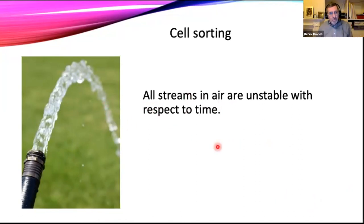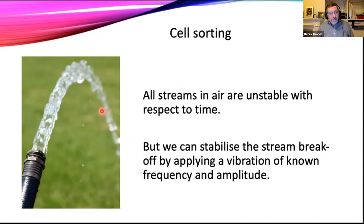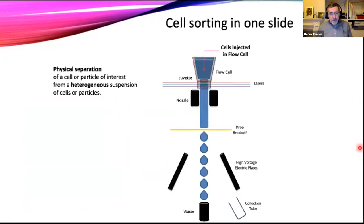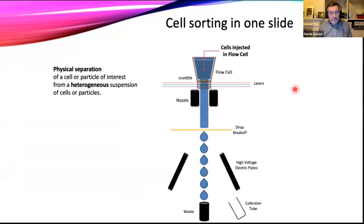Our streams are unstable — they're going to break up into droplets. If you vibrate a hose, the break-off stabilizes. We can stabilize that break-off by applying a known vibration — the number of times we move the hose per second and the amplitude. In essence, that's what we're doing on our flow sorter. This is cell sorting in one slide: we take our cells, inject them into a flow cell, they go through one or more laser beams, and as they go through those laser beams we get fluorescence emitted and capture the fluorescence characteristics of that cell.